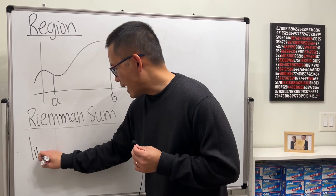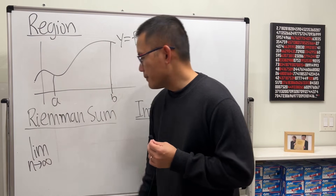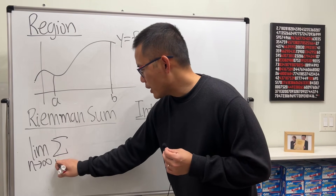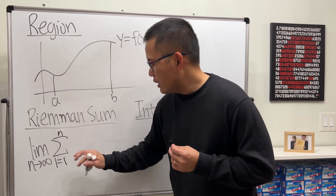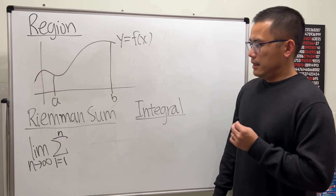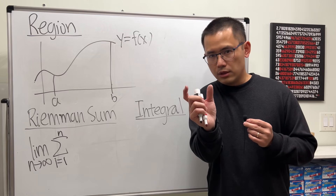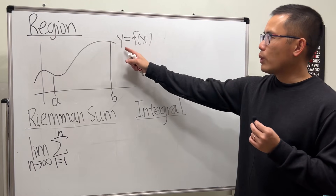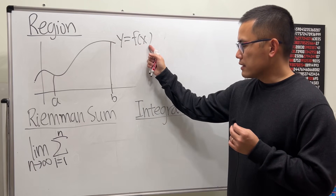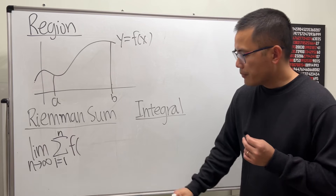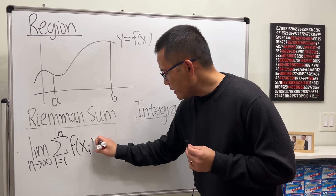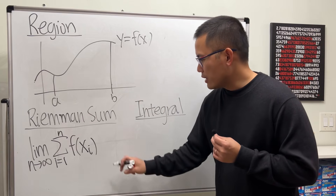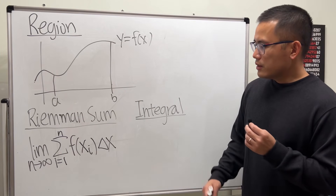You will always have the limit as n goes to infinity, and then because we are going to add up all the areas of the rectangles, you will have the summation with running index i going from 1 to n. Next, we write the width of the rectangle times the height. The height is the y-value of the function, so we write f of x_i — that's the notation for the height of each rectangle — and then we need the width of each rectangle, denoted by delta x.